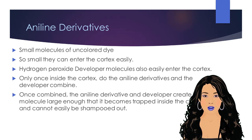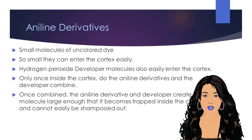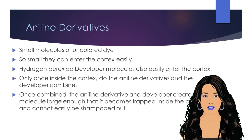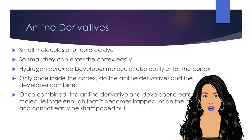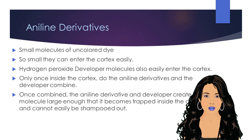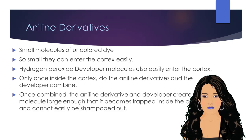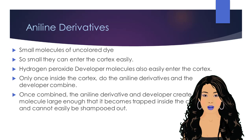Permanent hair colors contain aniline derivatives, which are very small molecules of color dye. These molecules are so small they can enter the cortex easily. Hydrogen peroxide developer molecules also easily enter the cortex. Only once inside the cortex do the aniline derivatives and the developer combine. Once combined, the aniline derivative and developer create a color molecule large enough that it becomes trapped inside the cortex layer and cannot easily be shampooed out.